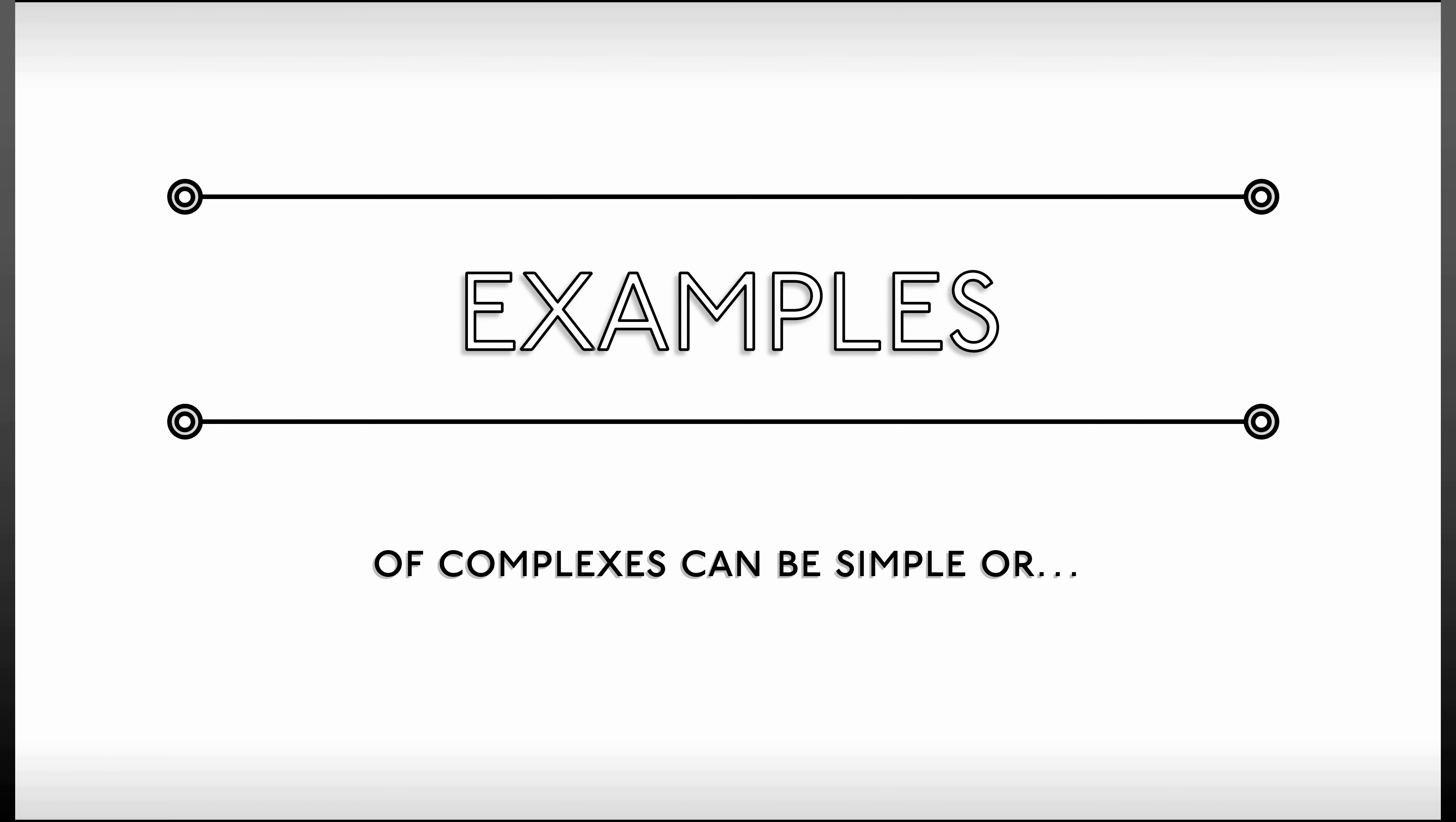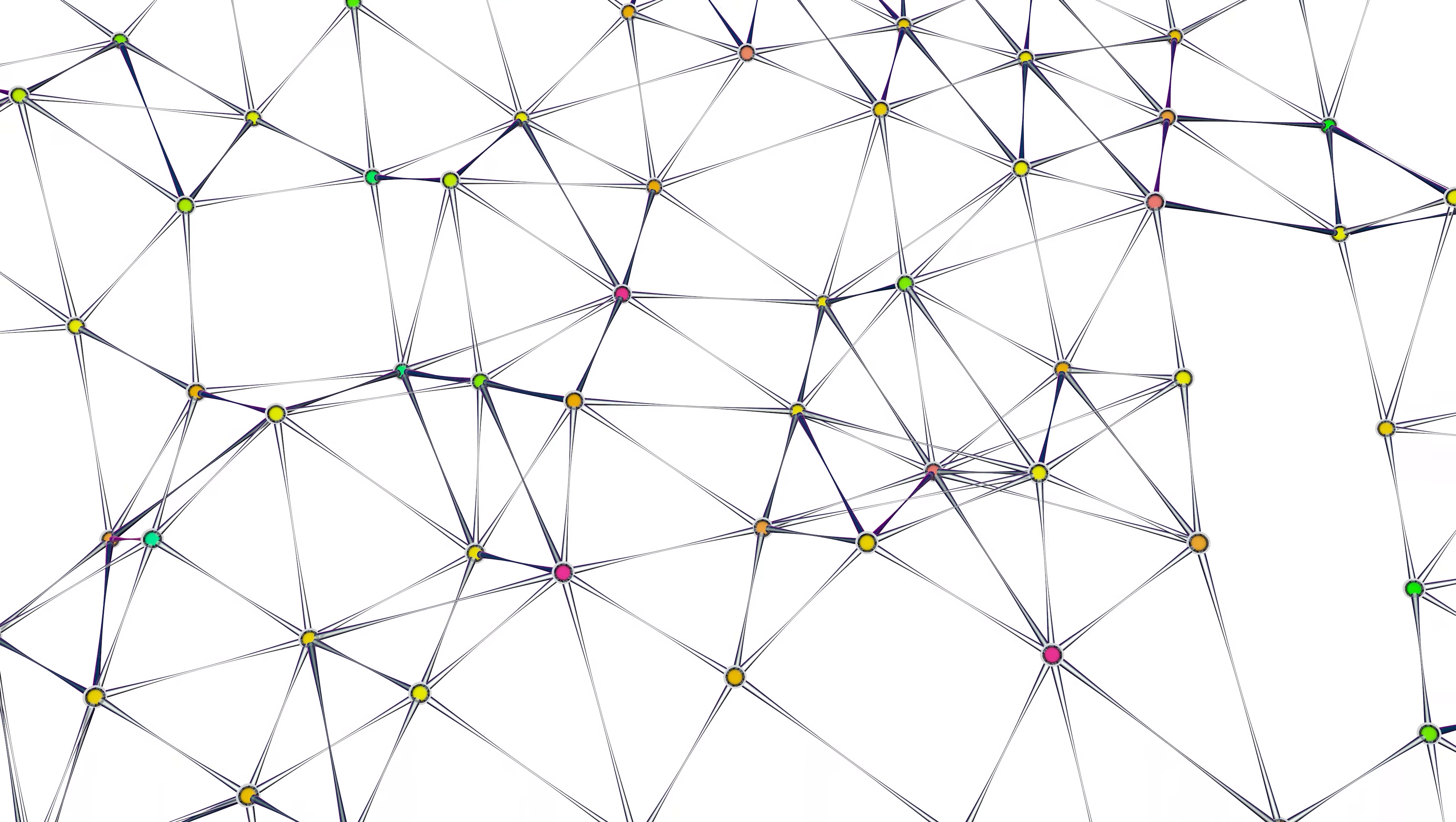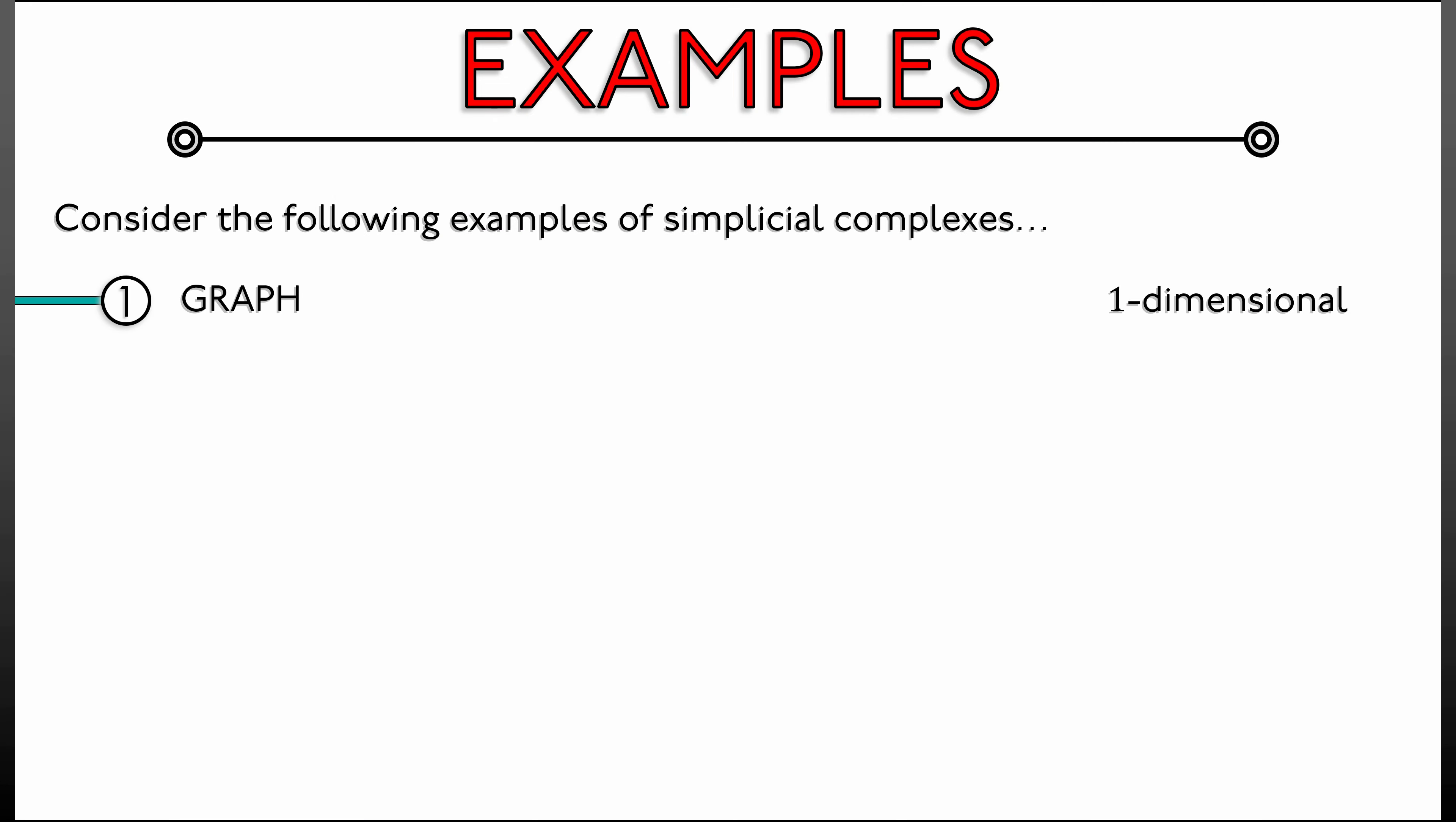Examples of complexes can be really simple. They can be not simple as well. Let's start with some simple ones. Consider a graph. This is a one-dimensional simplicial complex that consists of zero simplices, vertices, and one simplices, edges. The definition of a combinatorial graph perfectly matches what we have done for complexes. In fact, complexes are a vast generalization of combinatorial graphs.